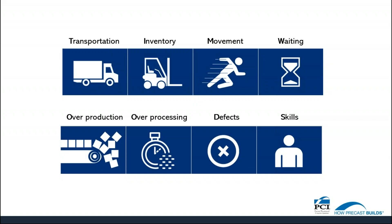These areas are: transportation — unnecessary movements of product, parts, and tools; inventory — excess production and material not being processed; movement — unnecessary movement of people; waiting — when there are delays between operations or waiting for parts or people; overproduction — when production is more than needed or before it's needed; over-processing — duplicate or redundant work that is not required yet we still do it; defects — efforts caused by rework, scrap, and incorrect information; and skills — under-utilizing people's talents, skills, and knowledge. After looking at lean methods, efficiencies, and financials, a simple three-step methodology was developed where the three steps are cycle time, labour, and rework.